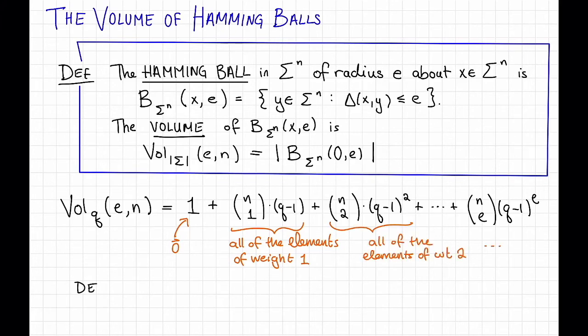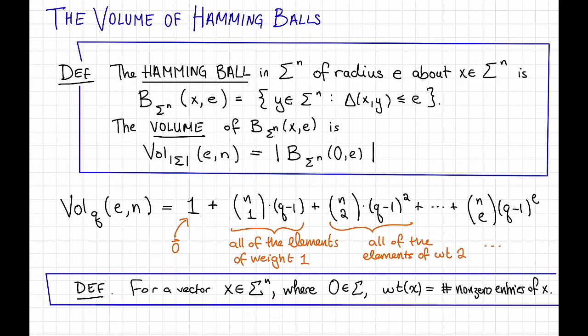Another quick definition. When I say the weight of a vector I mean the number of non-zeros. So for a vector x in sigma to the n where sigma contains 0, the weight of x is just the number of non-zero entries of x. Typically we're going to think of sigma as either the numbers 0 through q minus 1 or as something called a finite field which we'll define in a future video. But in either case 0 is going to be an element of sigma.